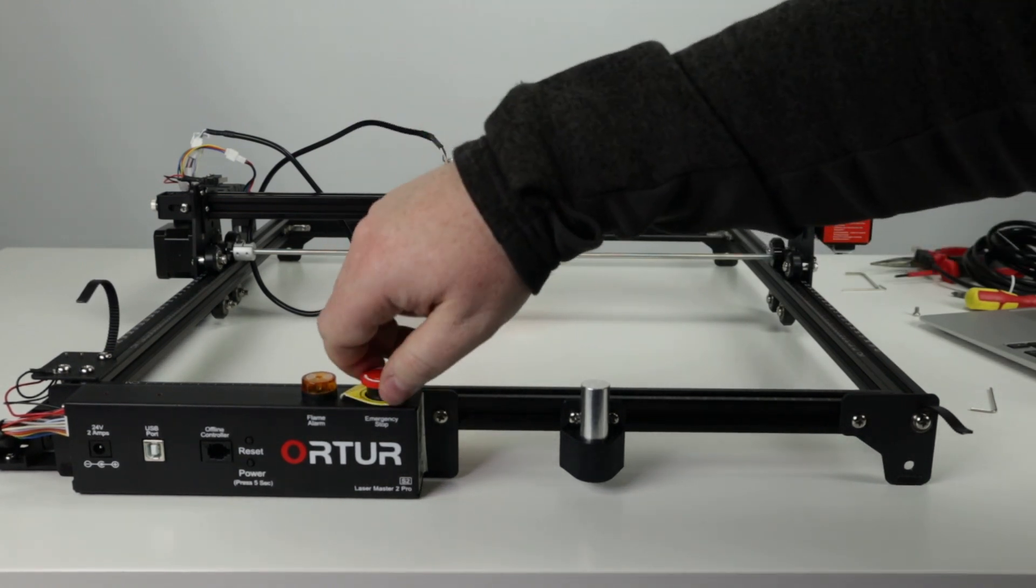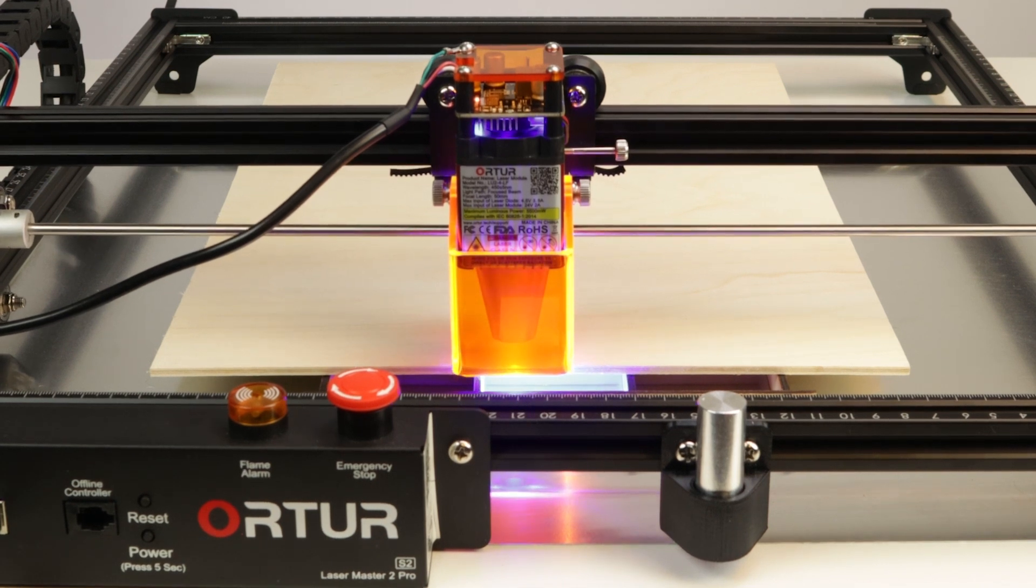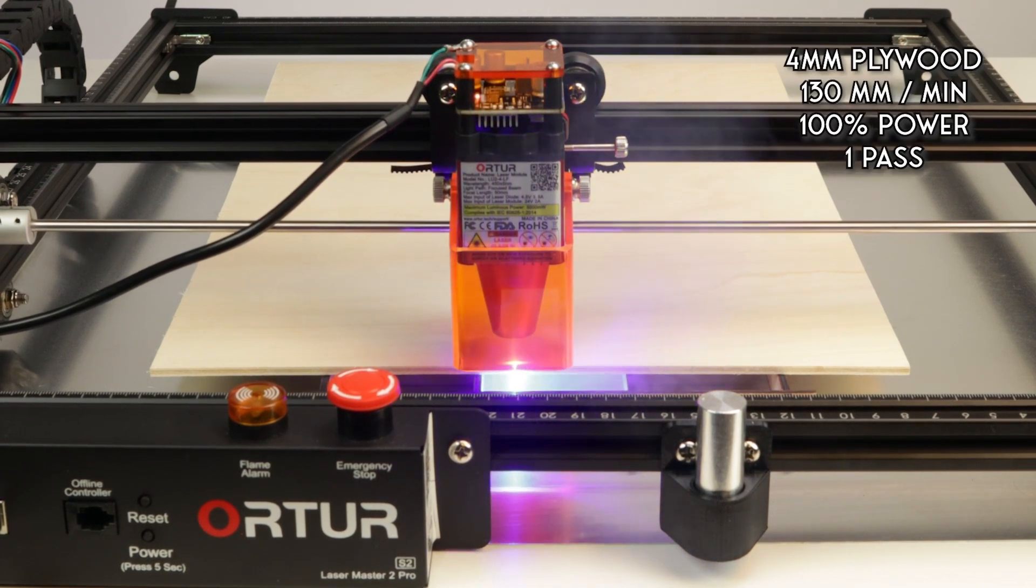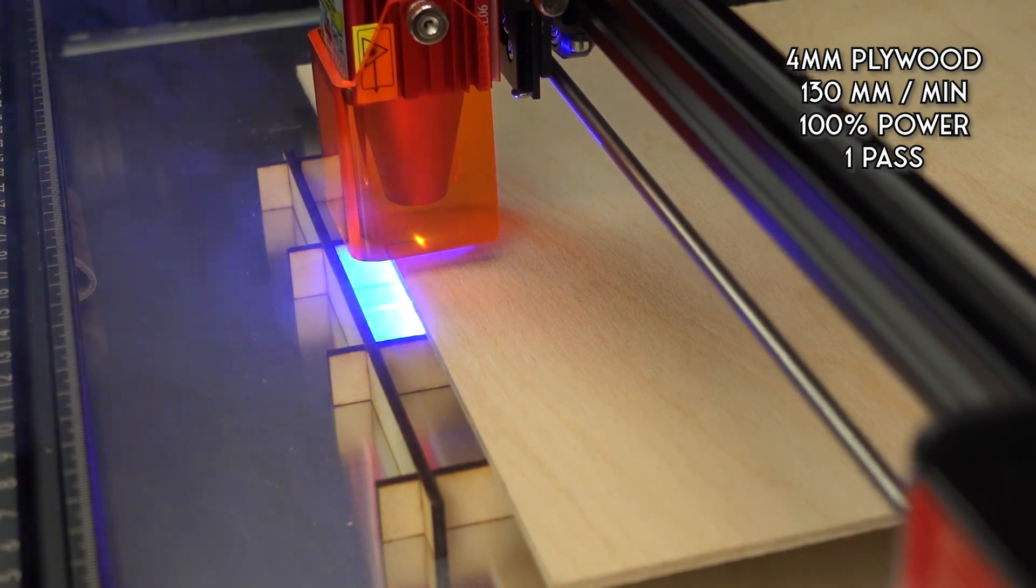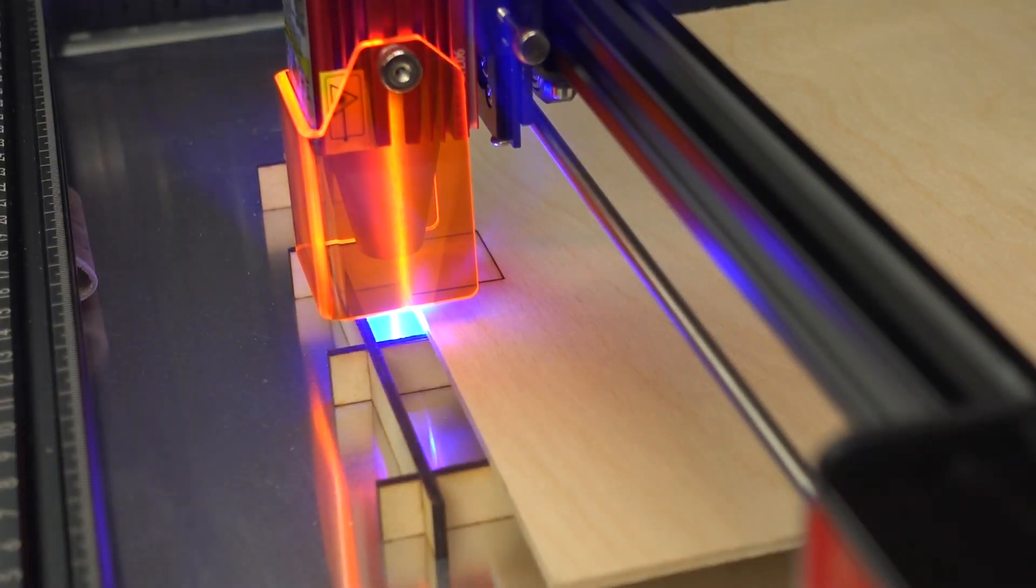Remember to release the emergency stop button before use. We started with a cutting test of 4mm plywood. Note, this is ordinary plywood and not special plywood. The machine is running at 130 millimeters per minute, 100% power, and one pass.